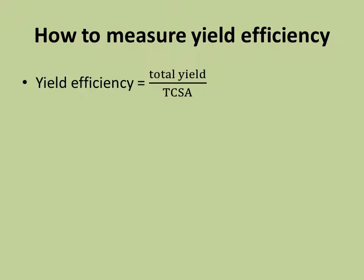At harvest, we can use the TCSA measurements to help compare yields of different varieties or even within the same variety because we have to take into consideration the size of the tree. So we calculate yield efficiency by dividing the total yield of the tree by the TCSA.